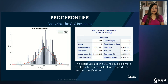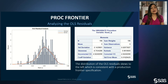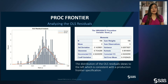To understand if stochastic frontier analysis is right for this application, you can first analyze the OLS residuals. From the histogram, there is some evidence of negative skewness. The summary statistics reveal a skewness parameter of minus 0.738, and the test for significance — not included in this slide — shows the skewness is statistically significant. So the distribution of the residuals skews to the left, which is consistent with the production frontier specification.